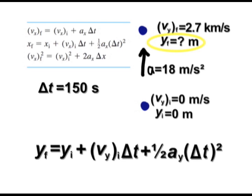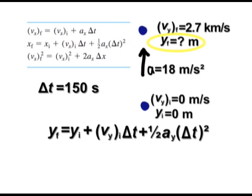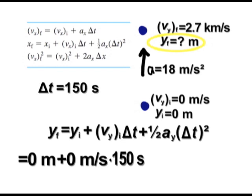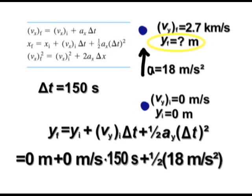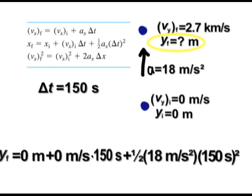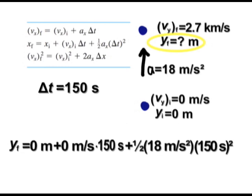Heavens to Betsy, I've got everything I need. What's the initial position? Zero. What's the initial velocity? What's the acceleration? 18 meters per second squared. What's the time interval? 150 seconds. Excellent. And so if I solve that out, I get something like, and I'm going to do an approximate here,